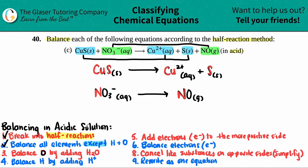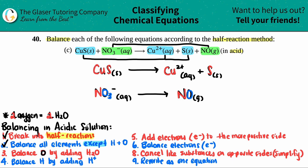Next, we balance oxygen by adding H₂O. If you need to add one oxygen to any side, you add one H₂O; two oxygens, two H₂Os, and so on. I don't see any oxygen in the first half reaction, so I skip that. But in the second one, I have three oxygens on the left and one on the right — I need two more, so I add two H₂O to the product side.